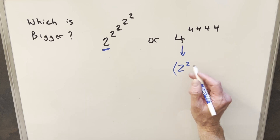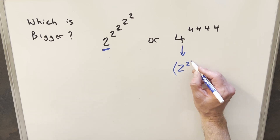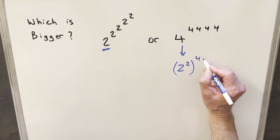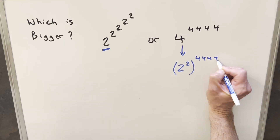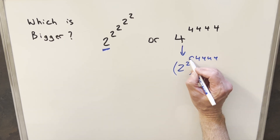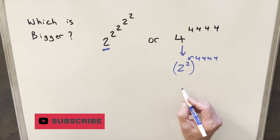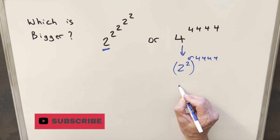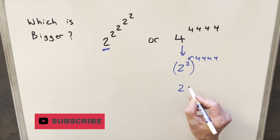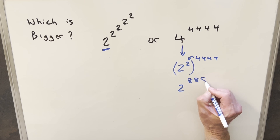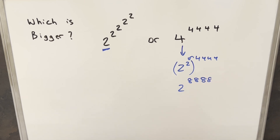Starting with the right side, for 2 squared to the 4 to the 4 to the 4 to the 4, I can just use exponent properties and multiply that in. And so now on the right side, this becomes 2 to the 8 to the 8 to the 8 to the 8.